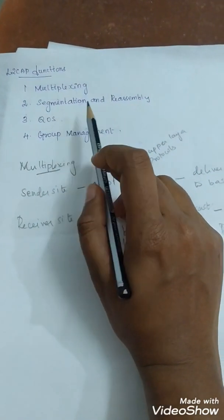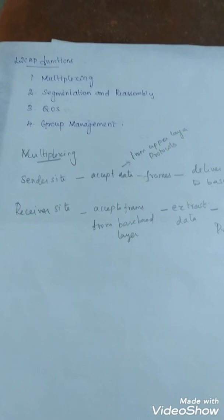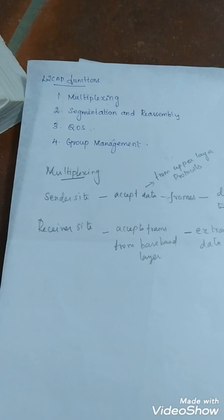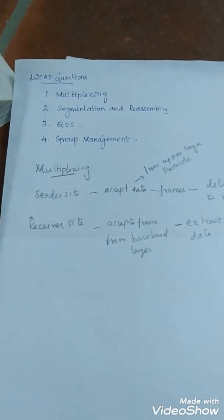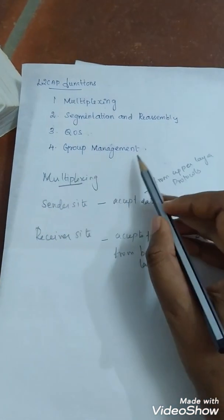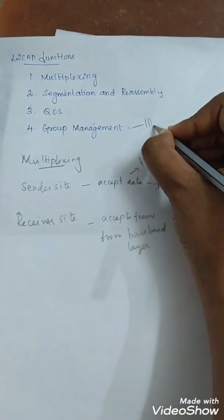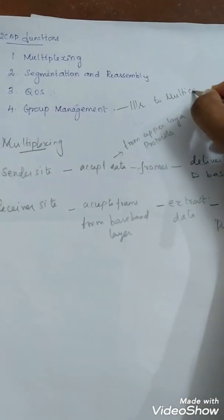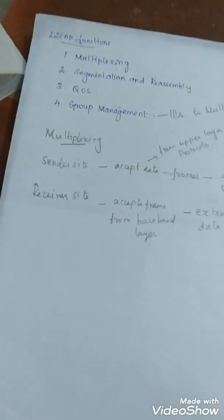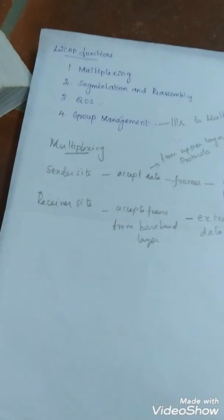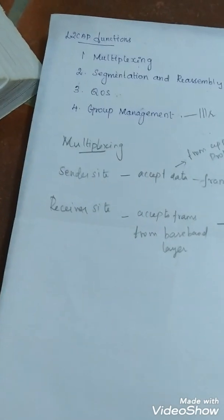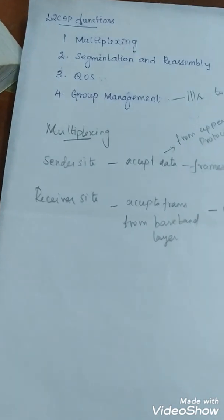Next one: QoS, quality of service. Bluetooth allows the station to define quality of service and will do its best under the circumstances. Next, group management is similar to multicasting. It allows devices to create a type of logical addressing. For example, two or three secondary devices can be part of a multicast group to receive data from its primary.